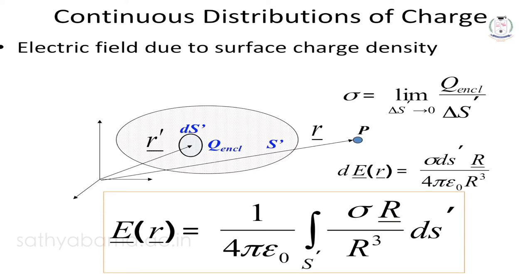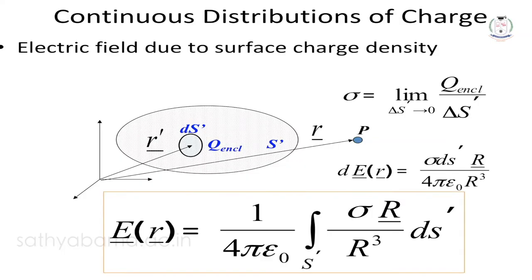For surface charge density, consider a disk where charge is accumulated on the surface, or a parallel plate where charge is spread out. Surface charge density sigma σ equals Q by ΔS, with unit Coulomb per meter square. To find the electric field intensity over the entire surface, we apply a double integral using the formula with 1/(4πε).